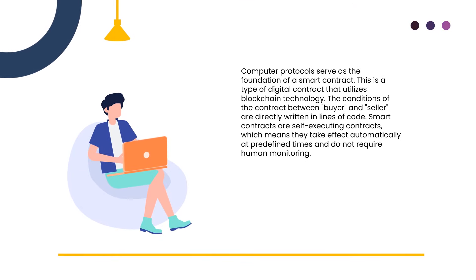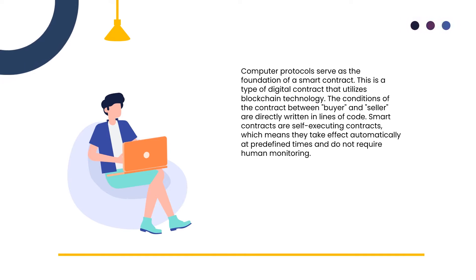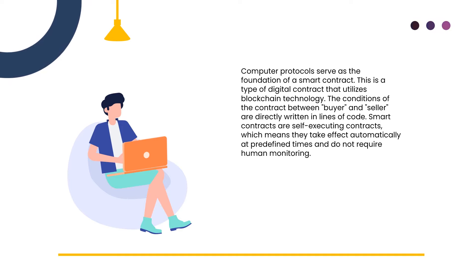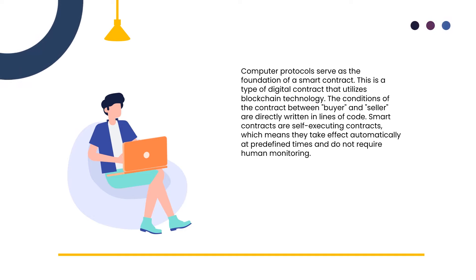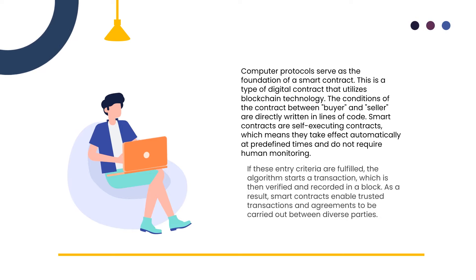Computer protocols serve as the foundation of a smart contract. This is a type of digital contract that utilizes blockchain technology. The conditions of the contract between buyer and seller are directly written in lines of code. Smart contracts are self-executing contracts, which means they take effect automatically at predefined times and do not require human monitoring.